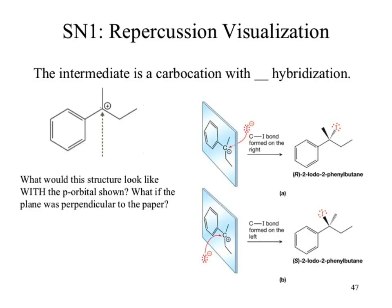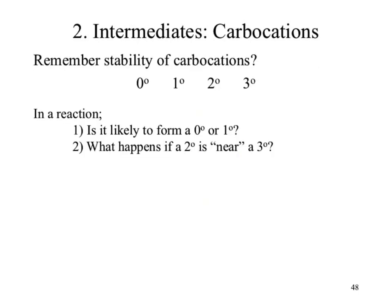Another big complication of SN1: we form a carbocation intermediate. Carbocations are unstable and immediately try to stabilize. The order of stability is: tertiary > secondary > primary > zero-ary. We can generally ignore primary and zero-ary carbocations. What is more stable than tertiary? Resonance. A primary carbocation with resonance can have its charge spread across multiple atoms, giving an effective charge of +0.5 instead of +1, making it more stable than a plain tertiary carbocation.